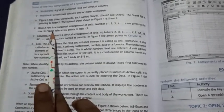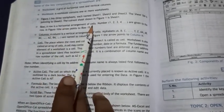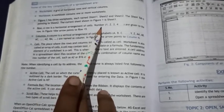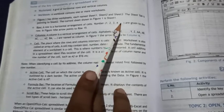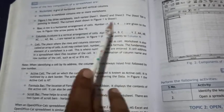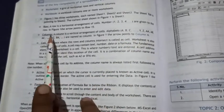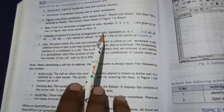Row: A row is a horizontal arrangement of cells. Rows are named with numbers like 1, 2, 3, 4, and so on.